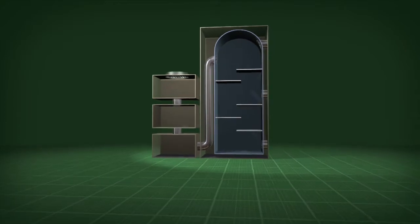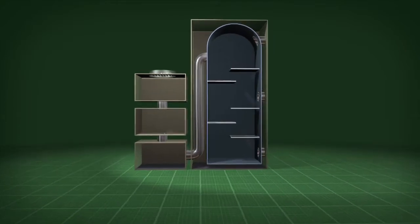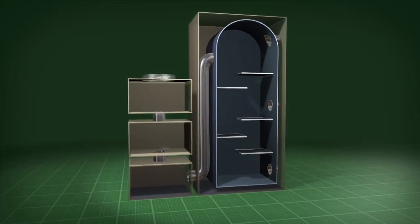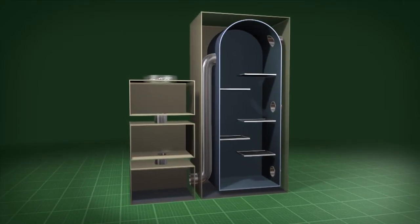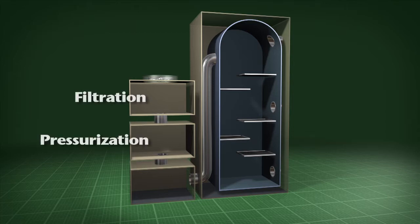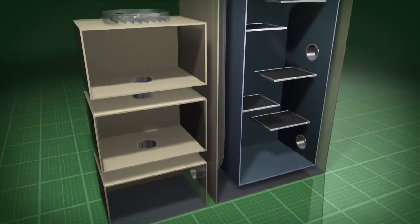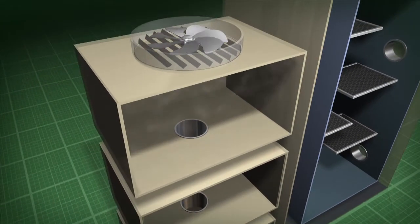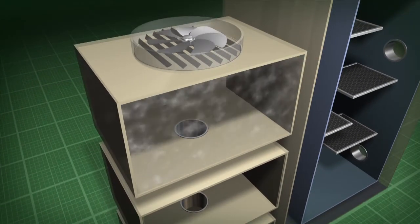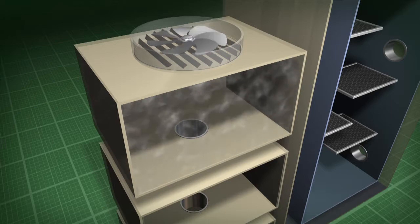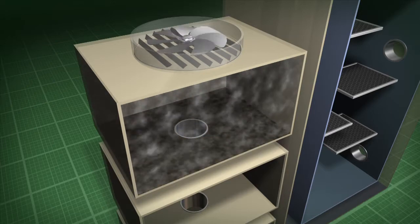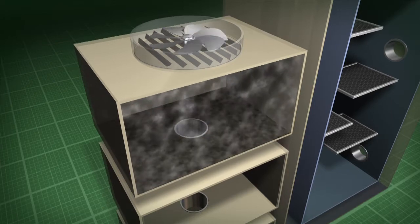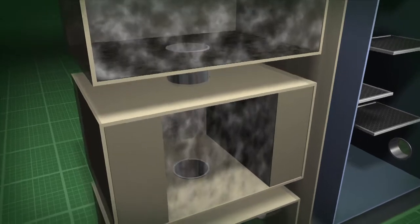Separating air molecules and transforming them from gases to liquids requires four basic steps: filtration, pressurization, cooling, and separation. First, the air is drawn in through an intake fan, where it's pre-filtered to remove any dust or debris. Then the air is moderately compressed and moved into a pre-cooling chamber.